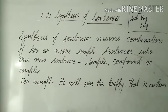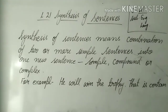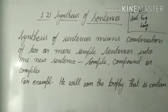You can join sentences into three types: simple sentence, compound sentence, and complex sentence. So the resulting sentence may be simple, compound, or complex — it depends upon how we are using it. Synthesis of sentences means combining two or more simple sentences into one new sentence, and that sentence can be simple or compound or complex.